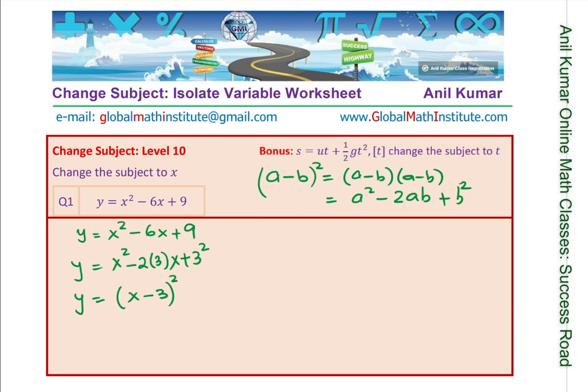That is our first step. Now once we have done this step, we are in a position to change the subject or isolate x. We are now writing this as (x - 3) whole square is equal to y. When you square root, remember that (-2)² is 4 and (+2)² is 4. Therefore x - 3 when we square root will be plus and minus square root of y. This is a very critical step. When I take 3 to the right hand side by adding 3 on both sides, we get 3 ± √y. We have isolated the variable x and so we have changed the subject.